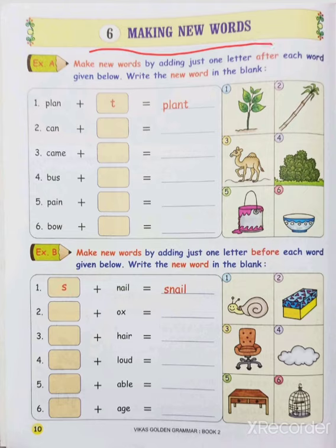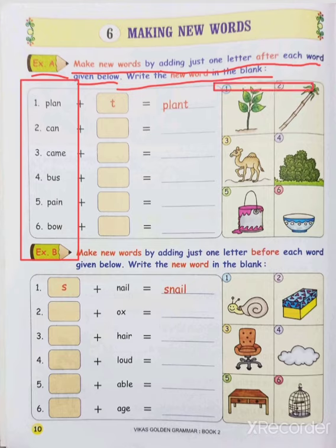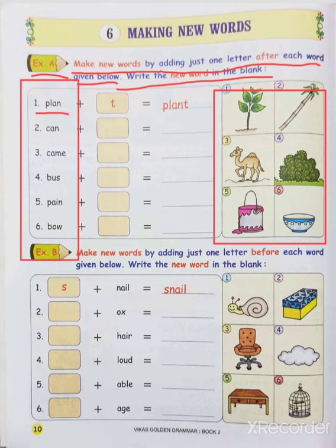Now, what is this 'making new words'? One word is given, and by adding one letter we can make another new word. We will see from Exercise A: Make a new word by adding just one letter after each word given below. Write the new word in the blank. The words given are: plan, can, came, bus, pain, bow.